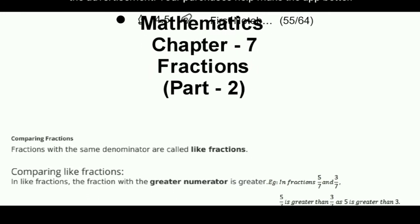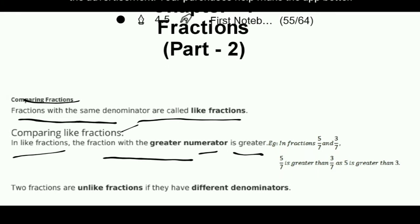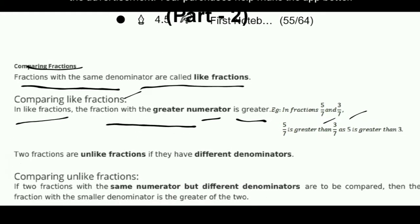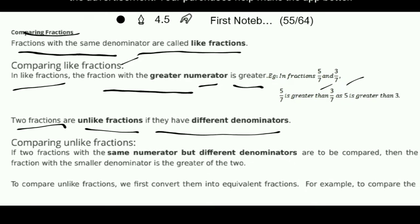Comparing Fractions means fractions with the same denominator are called Like Fractions. In Like Fractions, the fraction with the greater numerator is greater. For example, 5 upon 7 and 3 upon 7 — we are having the same denominator, so we see the numerator: 5 is greater than 3. Two fractions are Unlike Fractions if they have different denominators.